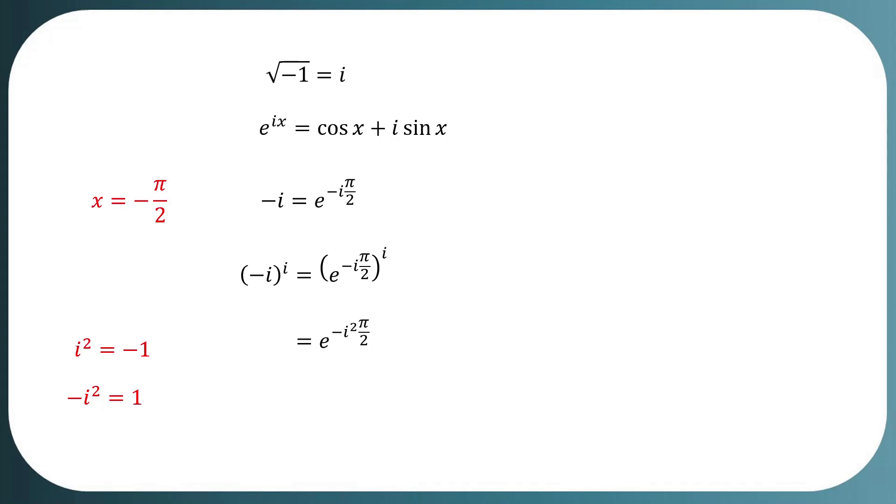Hence, negative iota to the iota power is equal to e to the pi by 2, which is approximately equal to 4.81048.